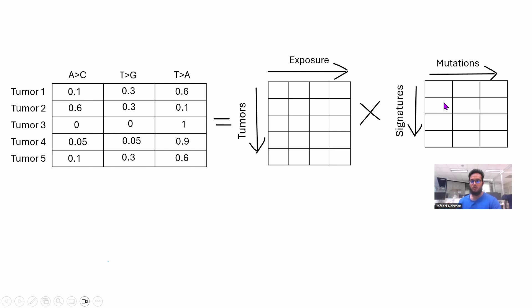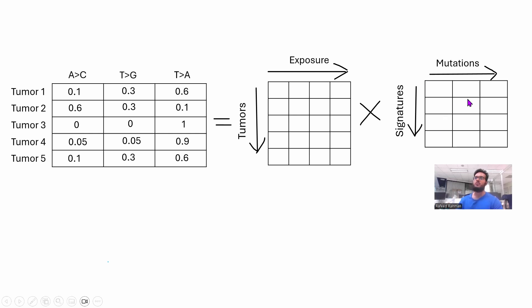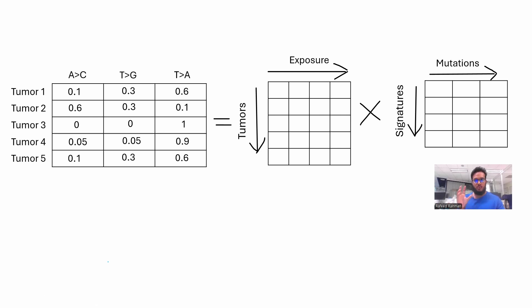Using the NMF algorithm to derive these two matrices, we learn exactly what the signatures are and how much exposure each signature contributed to each tumor's mutation profile. We had no idea whatsoever about the signatures or the exposure values, but we can get both using this method. After obtaining those signatures, we can match them with large mutation signature databases and identify the most similar known signatures affecting the person, as well as by how much, using the exposure values. That is how easily NMF can be used to do these complicated things.